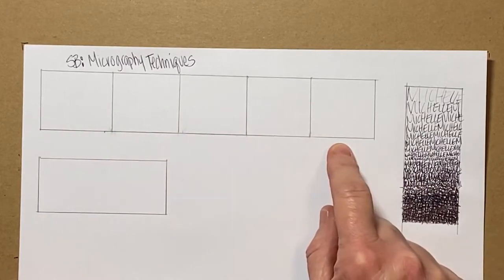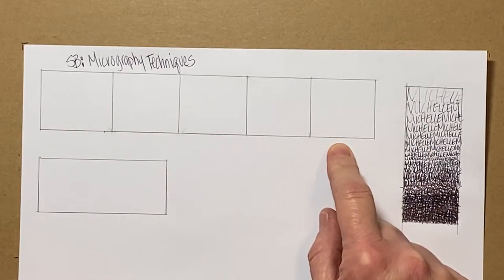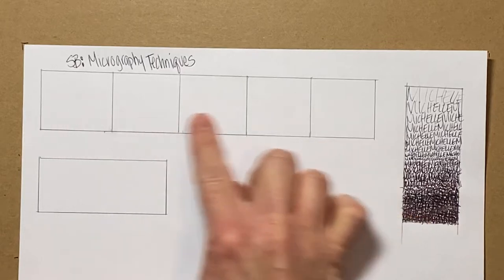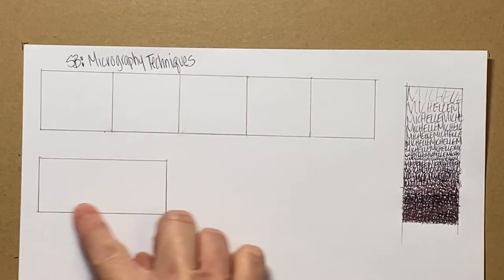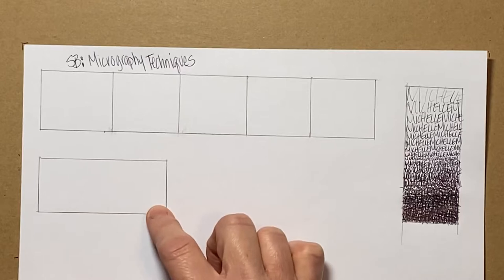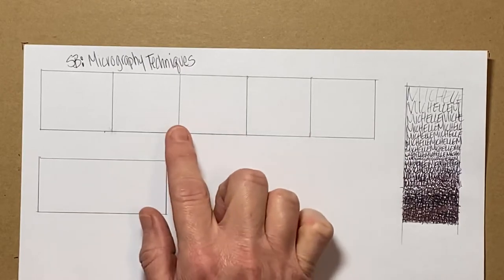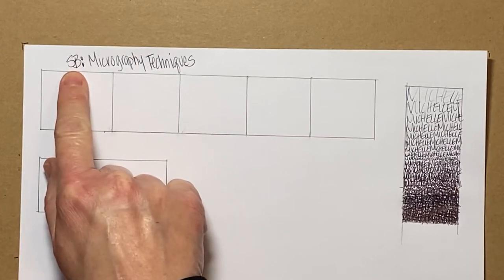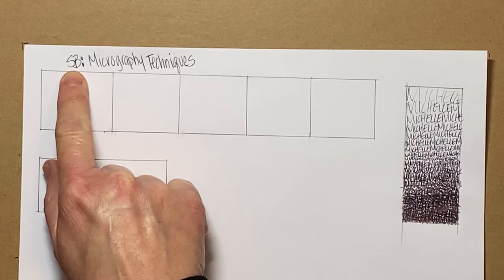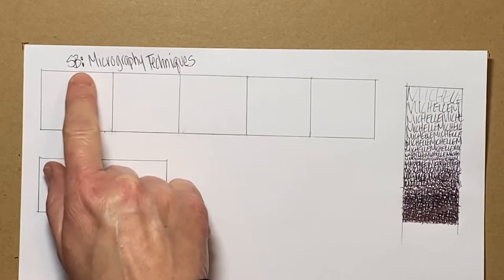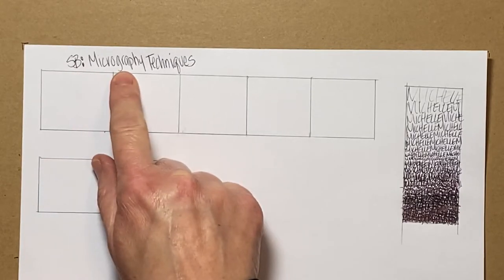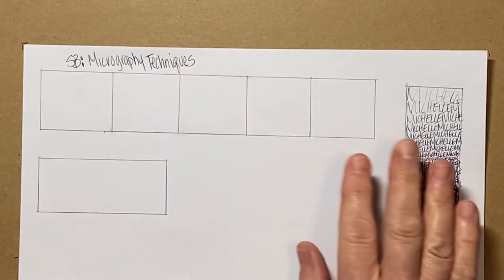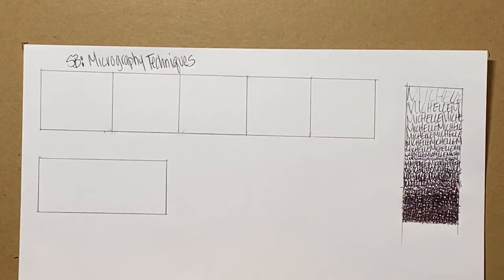We're going to do the block value scale and then we'll do a transitional value scale right under it. You can pause the video if you need to. I would also like you to write at the top of your sketchbook page SB Micrography Techniques. Let's get started.